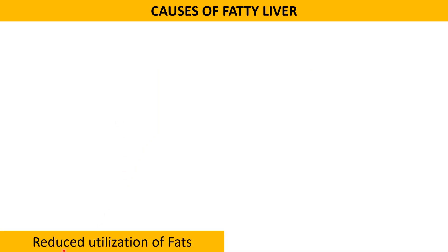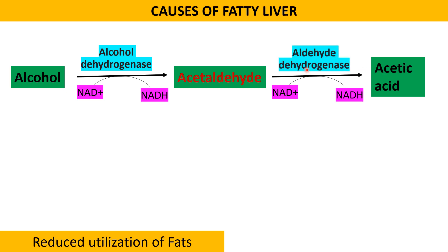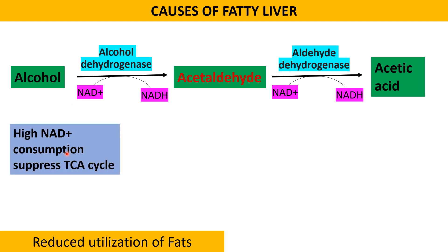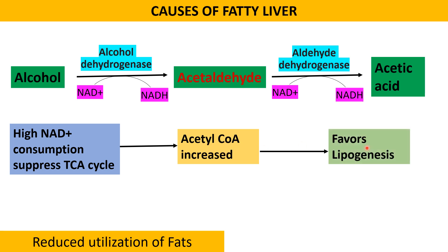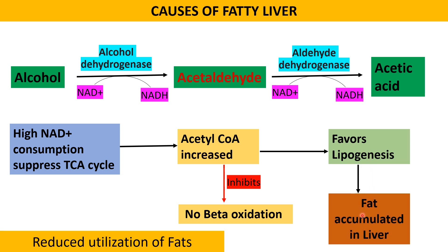The second cause of fatty liver is reduced utilization of fat due to alcoholism. In normal alcohol metabolism, alcohol is converted into acetaldehyde by alcohol dehydrogenase, and then into acetic acid by aldehyde dehydrogenase. Alcohol metabolism requires NAD+, and high NAD+ consumption suppresses the TCA cycle. Suppression of the TCA cycle causes accumulation of acetyl-CoA, which enters lipogenesis and inhibits beta-oxidation. Excess lipogenesis forms triglycerol which accumulates in the liver, causing fatty liver.